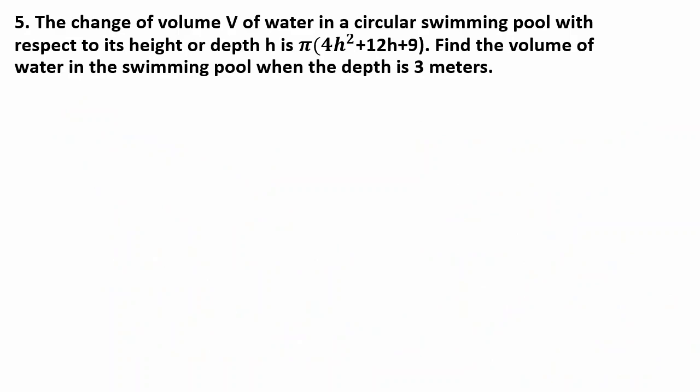The rate of change of volume of water in a circular swimming pool with respect to its height is pi times the quantity (4h squared plus 12h plus 9). Find the volume of the swimming pool when h equals 3 meters.